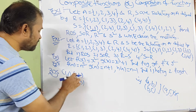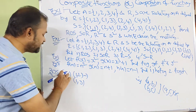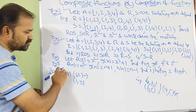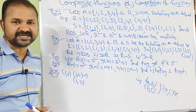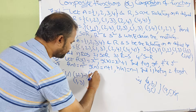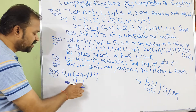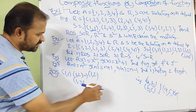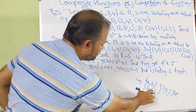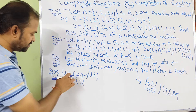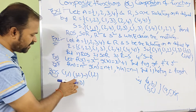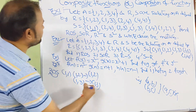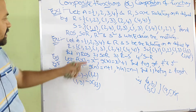We know about transitive relations: if (A,B) belongs to R and (B,C) belongs to R, then (A,C) also belongs to R. So from (1,1) and (1,2) — the middle elements cancel — we get new pair (1,2). Next, from (1,1) and (1,3), we get (1,3).